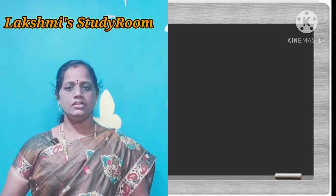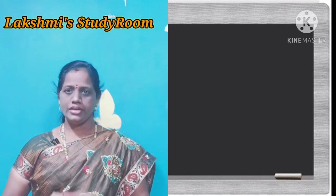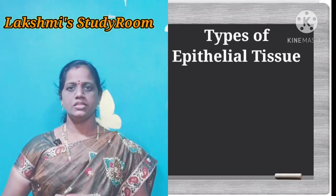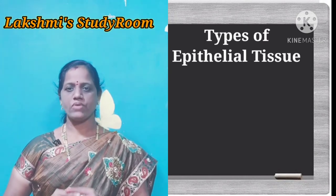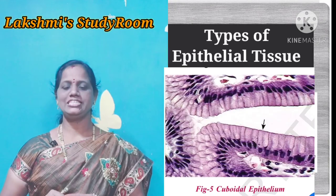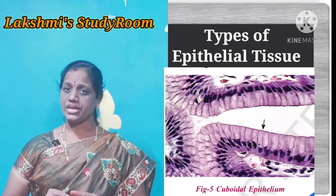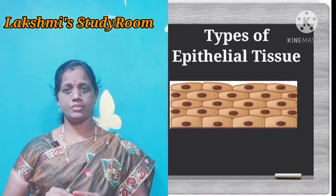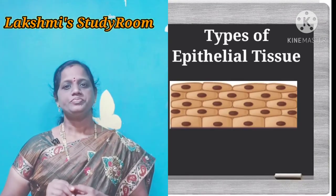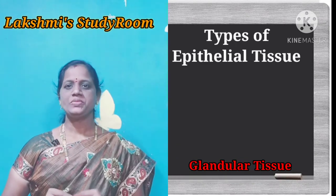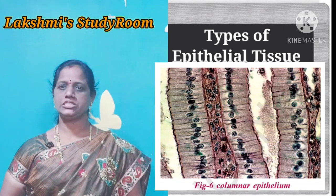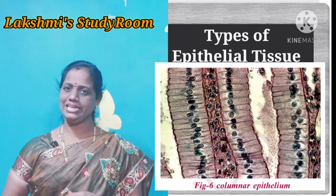Let us move on to the types of epithelial tissue: squamous epithelial tissue, cuboidal epithelial tissue, stratified squamous epithelial tissue, glandular epithelial tissue, and ciliated columnar epithelial tissue.